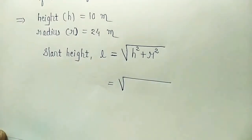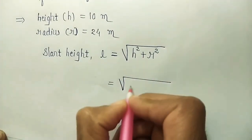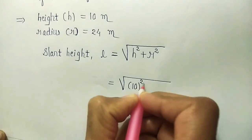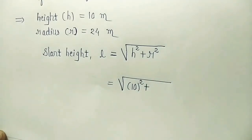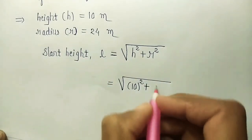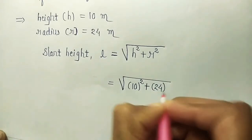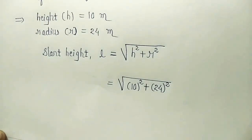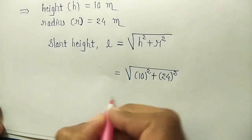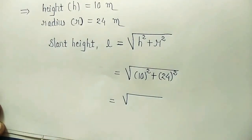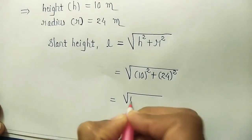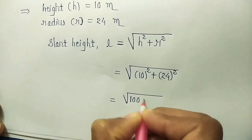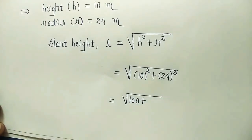Square root of h is what? H is what? 10. So 10 square plus r square. R is what? 24. So 24 square is equal to square root of 100 plus 24 square.